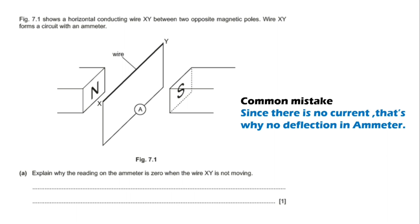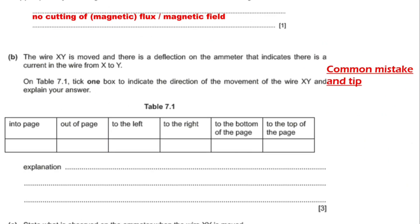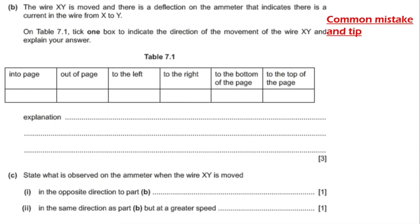Students should answer why there is zero current. The correct answer is: zero current because there is no cutting of magnetic flux or magnetic field lines. Next, the wire XY is moved and there is a deflection on the ammeter, indicating there is a current in the wire from X to Y.